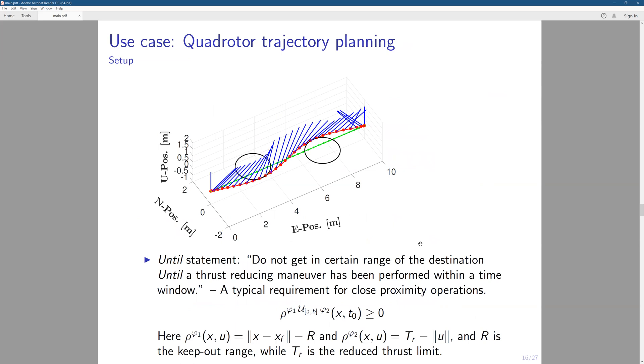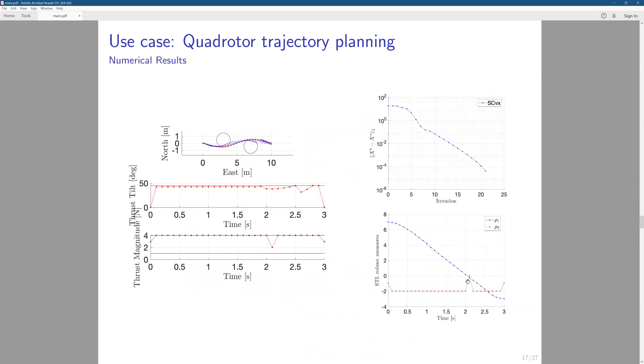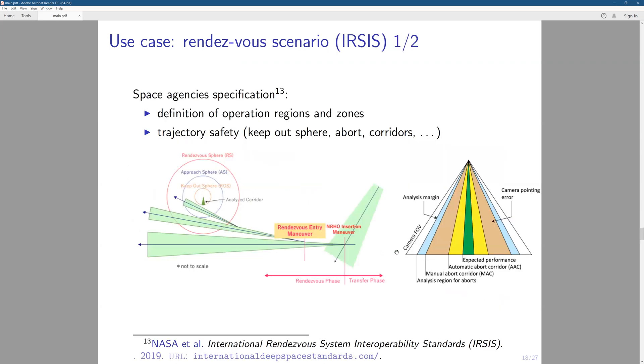So in the paper, we have seen this use case on the quarter trajectory planning. And we have this until requirement saying that we do not get into a certain range of the destination until thrust reducing maneuver has been performed. And you can see that in the result, we have seen the thrust maneuver has been performed as rho two. And so until this time, rho one always holds. So the result checks out.